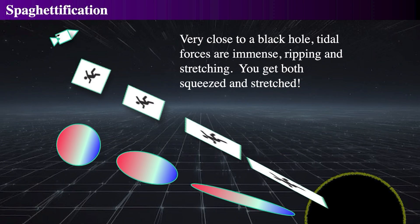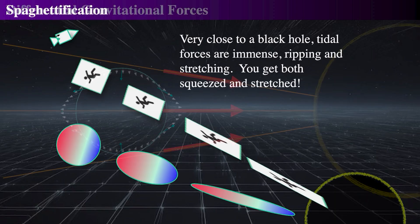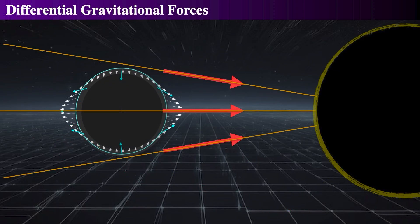Finally, we look at Jack's experience of spaghettification, which is the stretching and squeezing caused by the black hole's intense, non-uniform, differential gravitational forces. It is non-uniform in the fact that gravity is directed radially inward towards the center of mass.